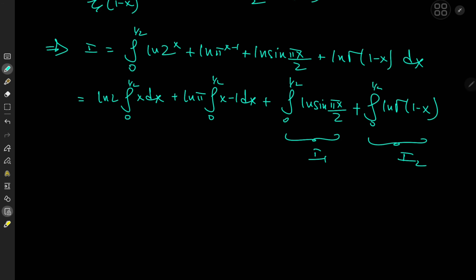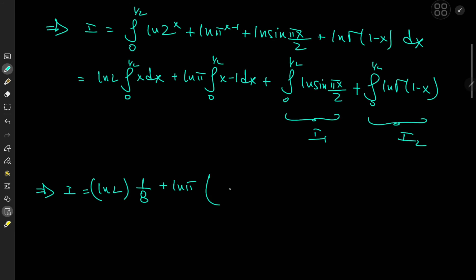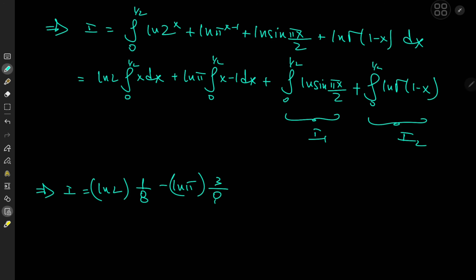The first couple of integrals are elementary. We get log 2 · [x²/2] from 0 to 1/2, which gives 1/8 · log 2. Then log π · [x²/2 − x] from 0 to 1/2: at x = 1/2 we get 1/8 − 1/2 = −3/8, so we have −3/8 · log π.